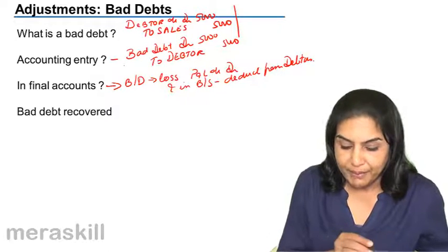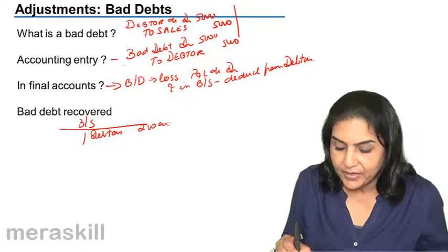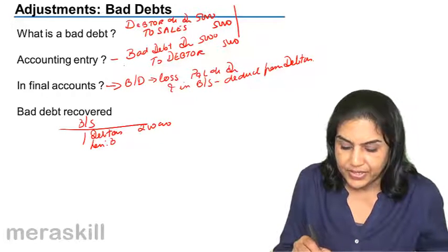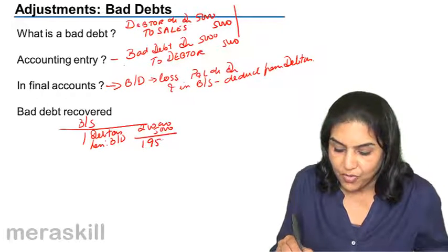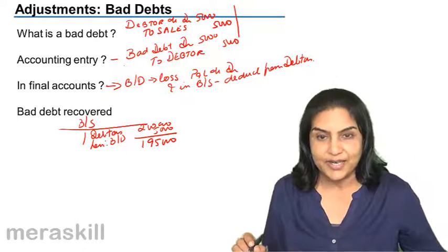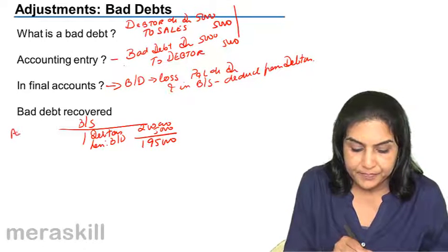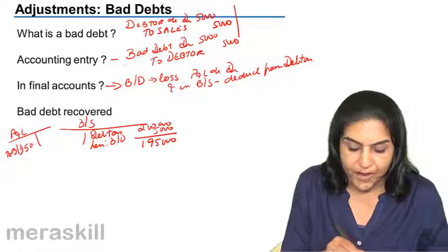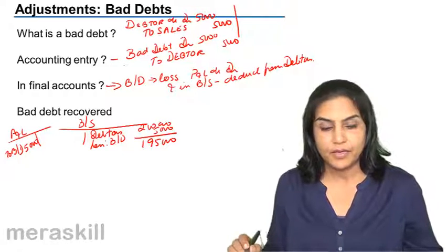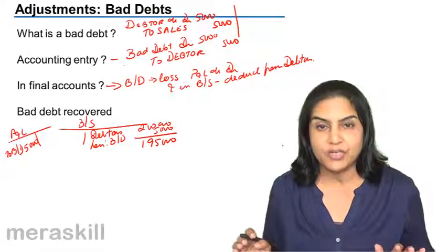So what will happen in the balance sheet? We will have debtors — maybe debtors of 2 lakh. We then say bad debts now being written off: 5,000, giving us a total of 1,95,000 as debtors. In the profit and loss account, bad debts of 5,000 are debited. So a bad debt is an amount which is receivable from a debtor but is not going to be received.